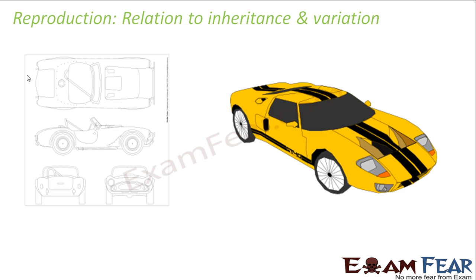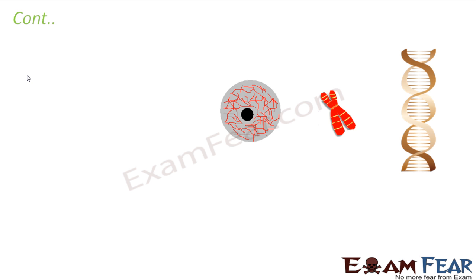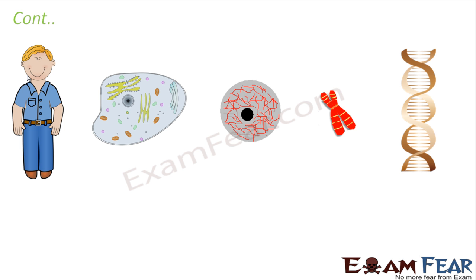Similarly, in reproduction we are talking about the formation of a new organism, so there is a blueprint which decides how that new organism is going to be. In the case of human beings, when a human being gives birth to a new baby, there is a blueprint that decides how that child is going to be. Our body is made up of cells, and inside the cell we have the cell nucleus.